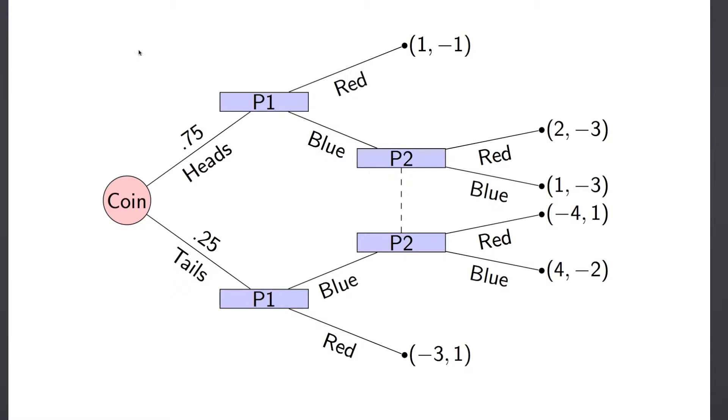So here's how we can represent this. Players are in squares and random events are in circles. So in this game you flip a coin and then player one and player two both choose red or blue. And note that they're doing it at the same time because these two nodes are in the same information set. And then we can read off the utilities.